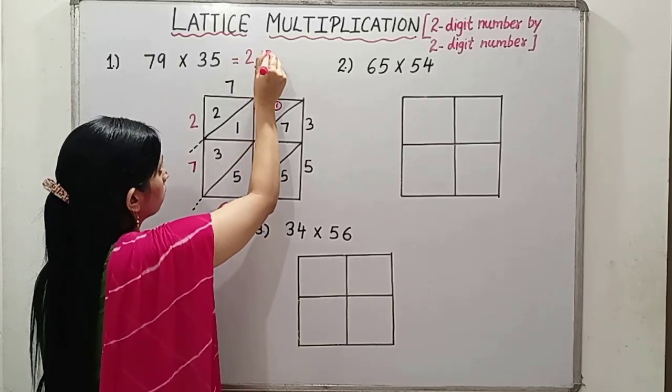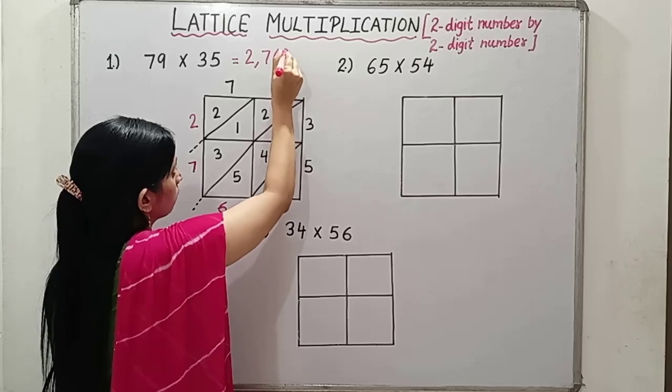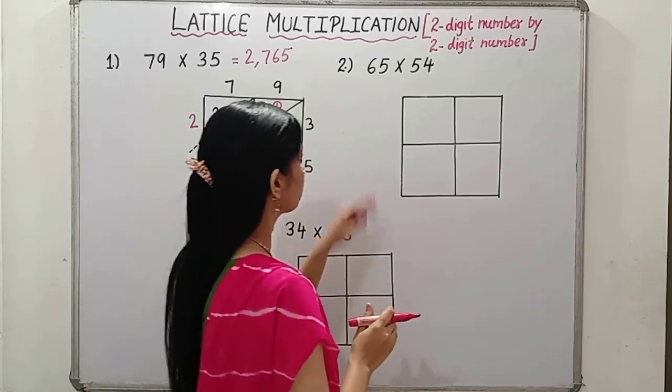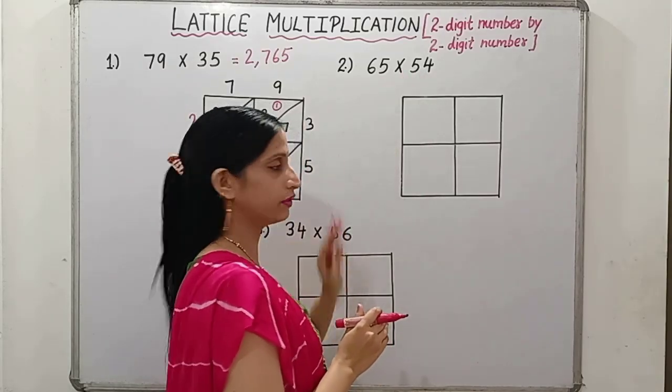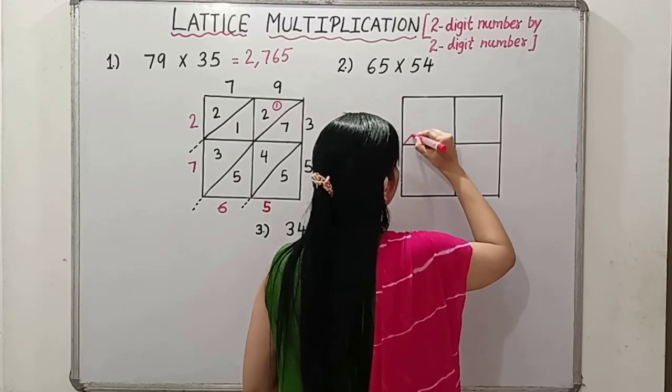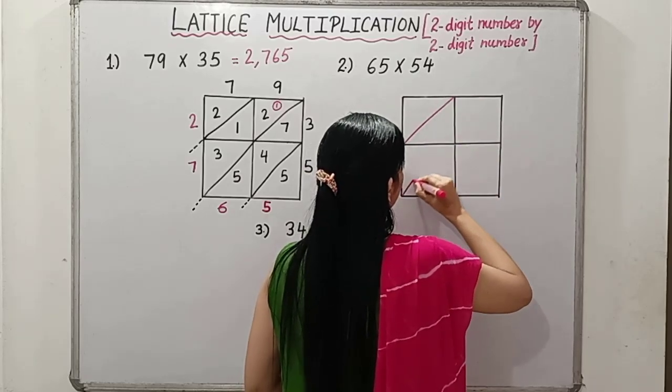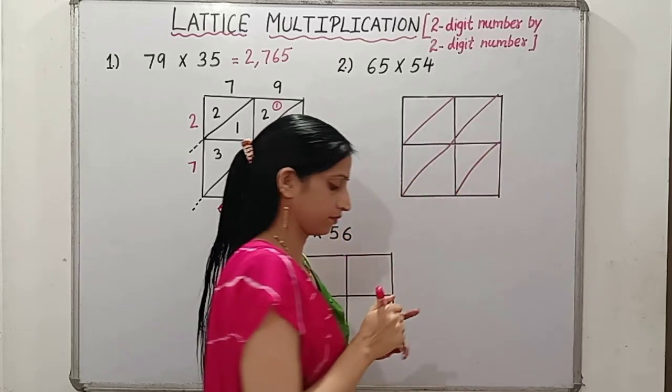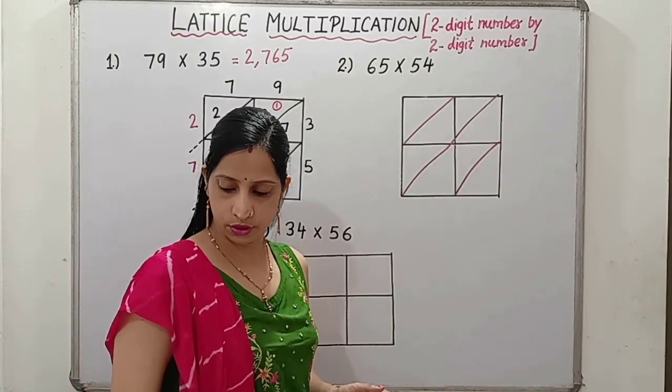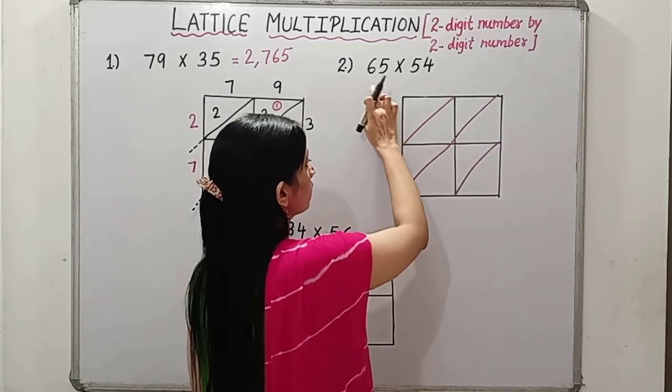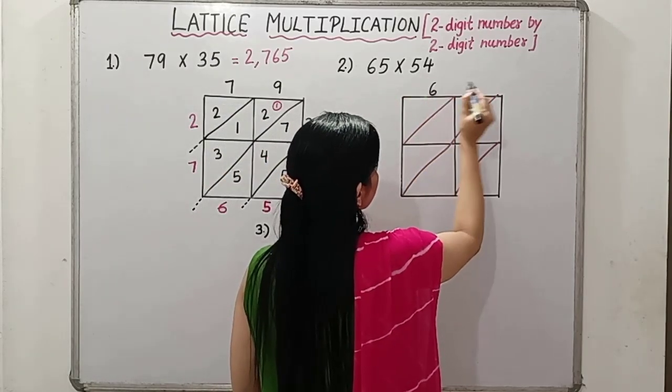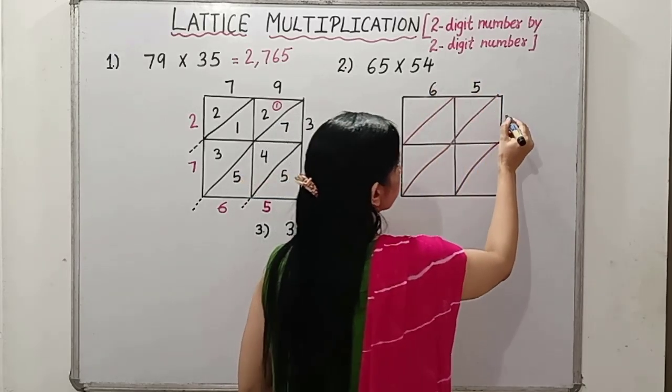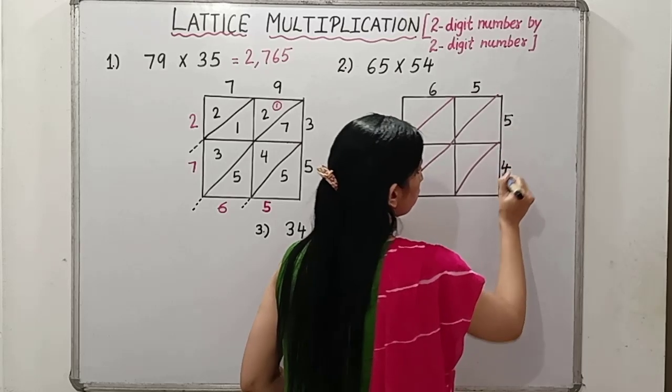So let's do another question. It is 65 multiplied by 54. So first thing to draw the diagonal. Now, let's do number is 65 into 54. Write 6 here, 5 here, and 54, 5 and 4.